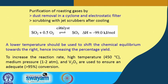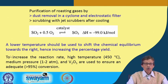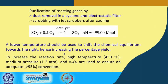Welcome back. We are talking about the conversion of sulfur dioxide to sulfur trioxide. We have seen that a catalyst is required, and we should go for a low temperature reaction to increase the conversion amount — that means, the percentage yield of SO₃.